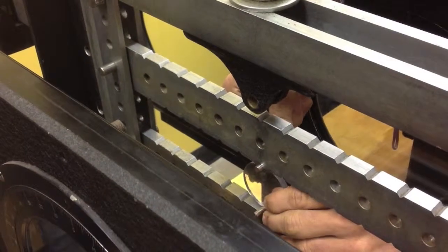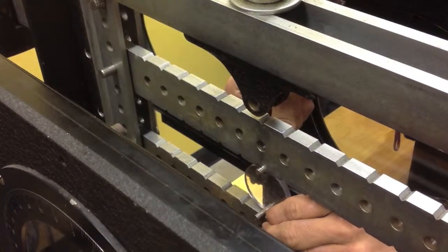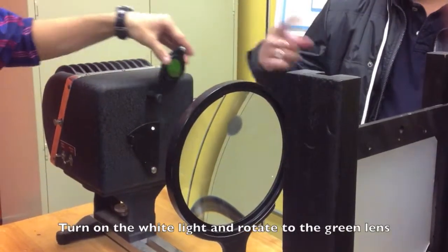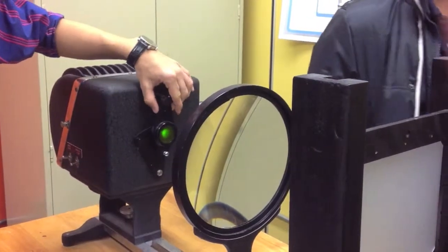Load the specimen. Turn on the white light and rotate to the green lens.